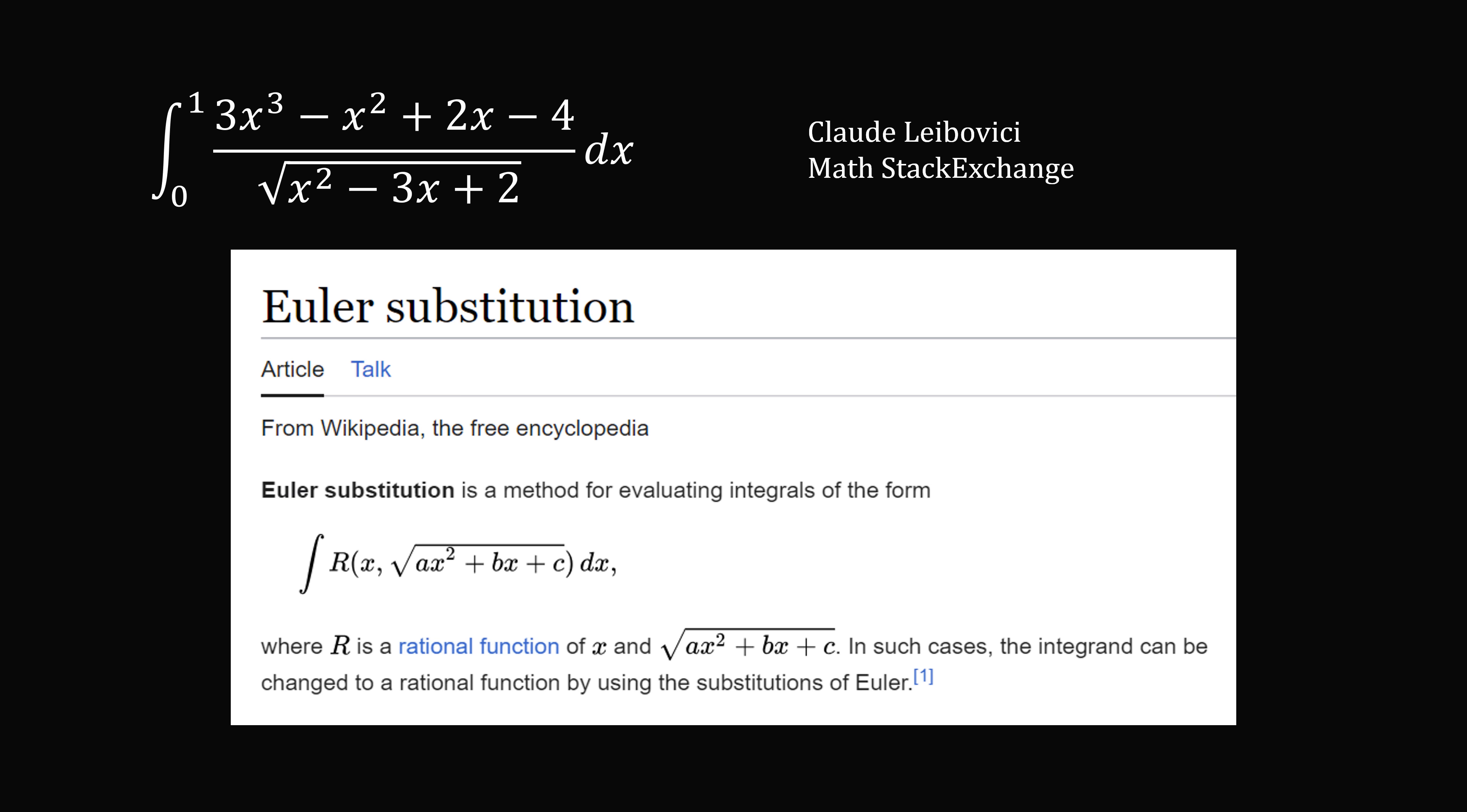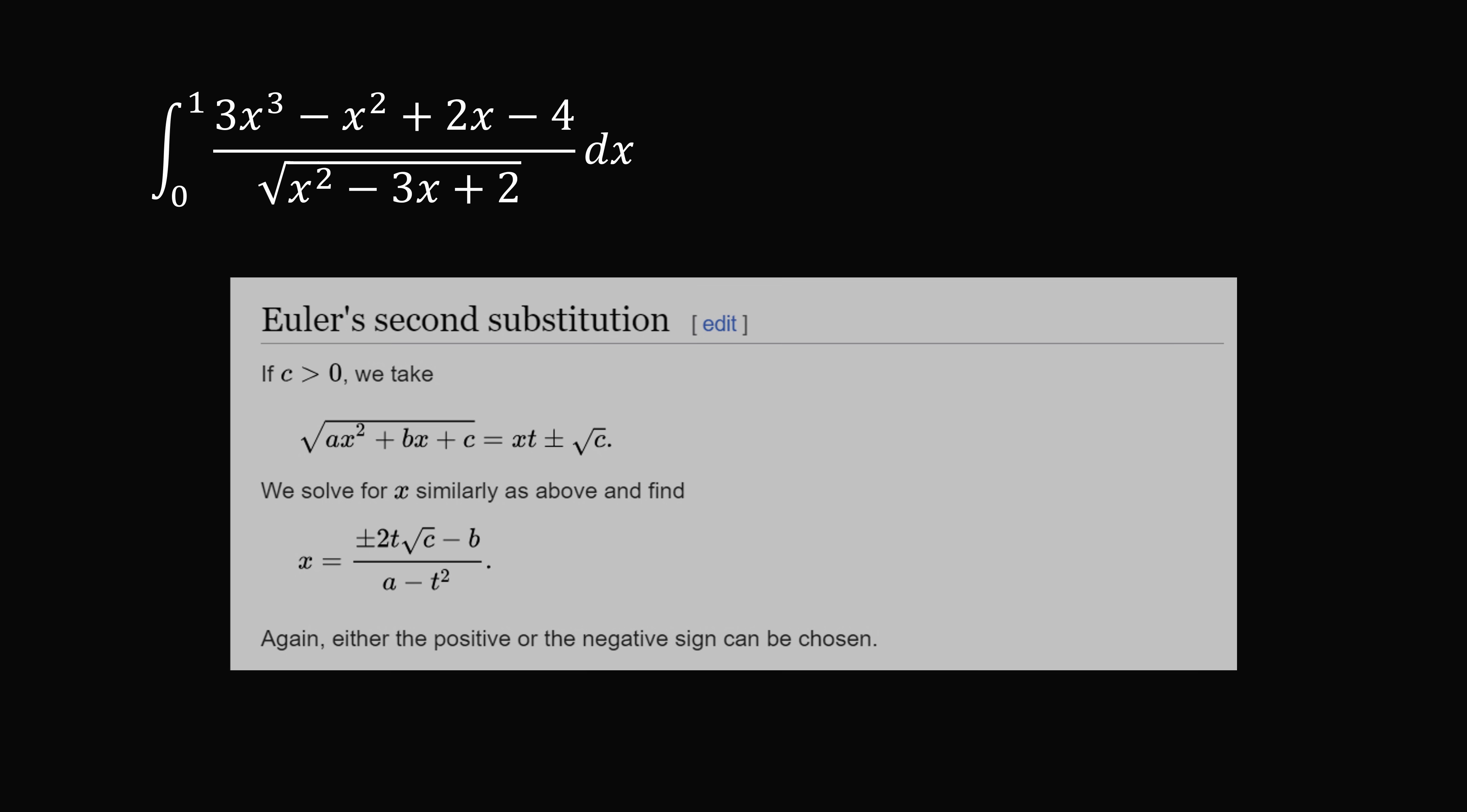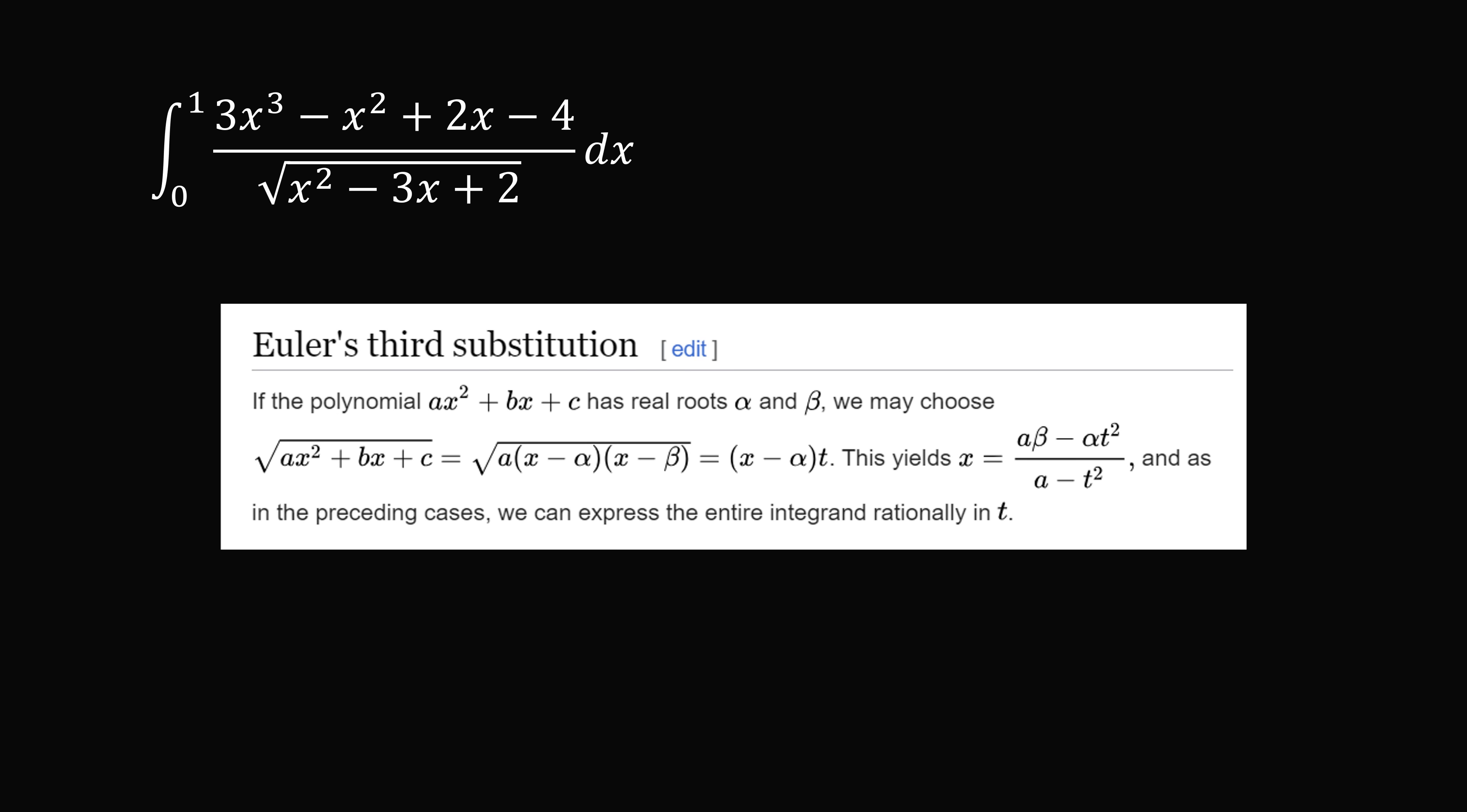Euler Substitution is a trick for evaluating integrals of the form where you have a rational function of x and the square root of the quadratic ax squared plus bx plus c. There are many different versions of this substitution. One version is you set that square root of the quadratic equal to plus or minus x multiplied by the square root of a plus t. You end up with a function that will simplify. We're going to use this first substitution. But there are other substitutions that could be useful in different problems. Another one is x times t plus or minus the square root of c. A third version is to take x minus alpha, the quantity multiplied by t, and alpha is one of the real roots of this quadratic equation.